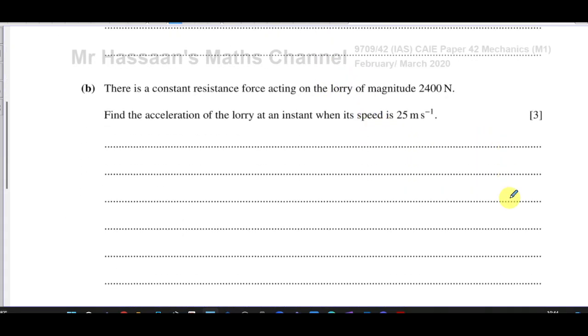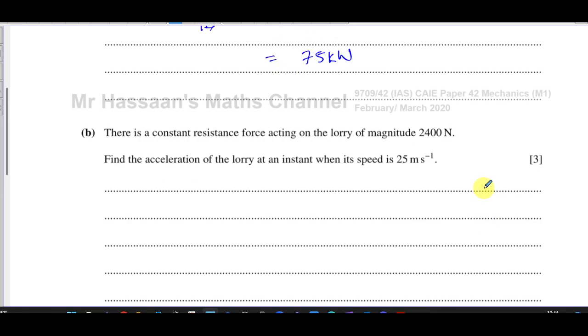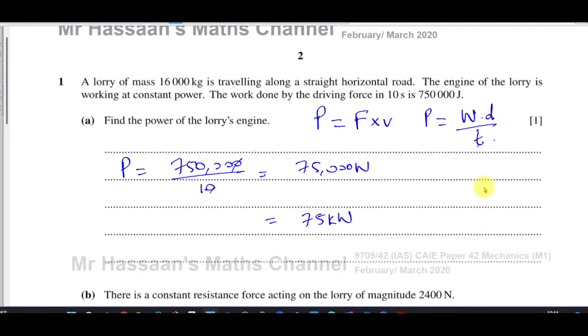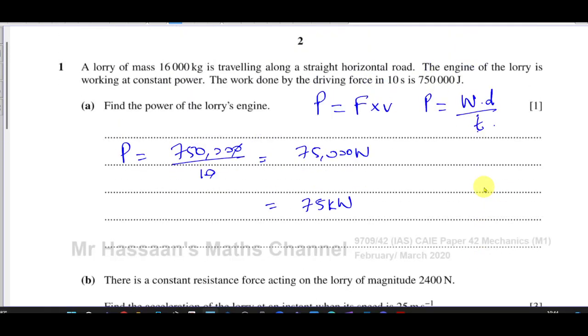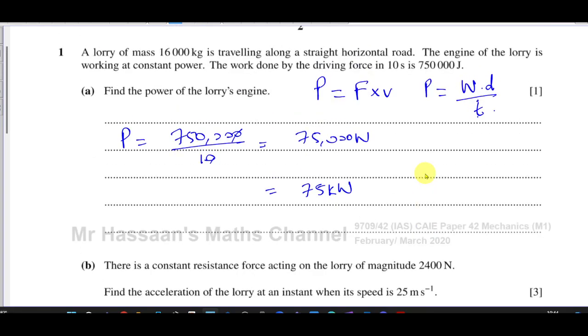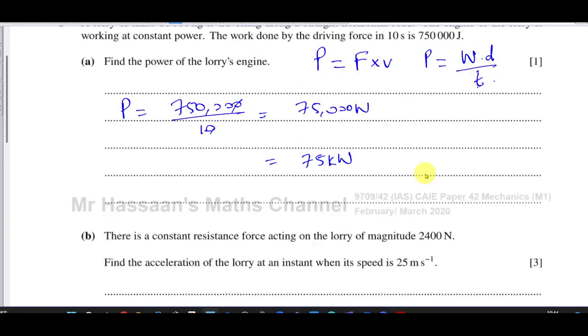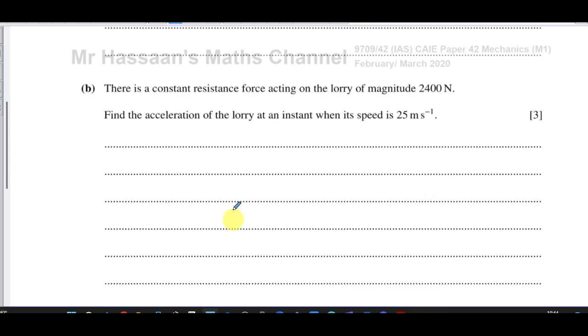Then for part B, it says there is a constant resistance force acting on the lorry of magnitude 2400 newtons. Find the acceleration of the lorry at an instant when the speed is 25 meters per second. So we know the mass of the lorry. We know the driving force. So we know the work done by the driving force. But what we've got to do is we've got to work out the acceleration of the lorry. So we've got to work out the acceleration, we need to know the resultant force.